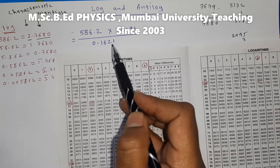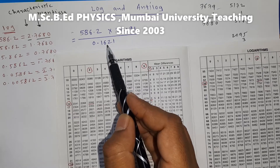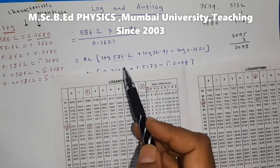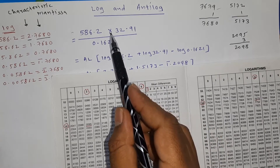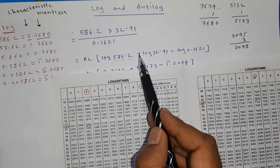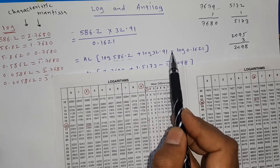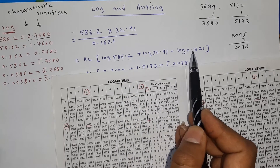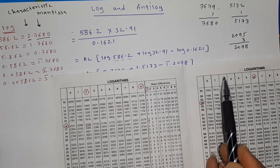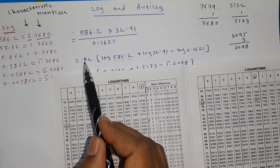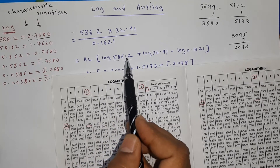For multiplication you have to add the log; for division you have to subtract the log. So we write: log of 586.2 plus log of 32.91 minus log of 0.1621. After calculating the log, finally we have to see the anti-log. In the beginning itself you can write the anti-log, so we write: anti-log of [log 586.2 + log 32.91 − log 0.1621].